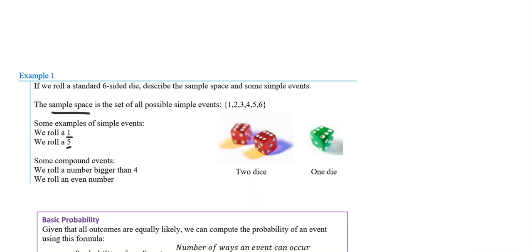Compound events — compound just means made of more than one thing, made of multiple things. That would be something like rolling a number bigger than four, or rolling an even number. There's more than one answer for that, so those are compound events.